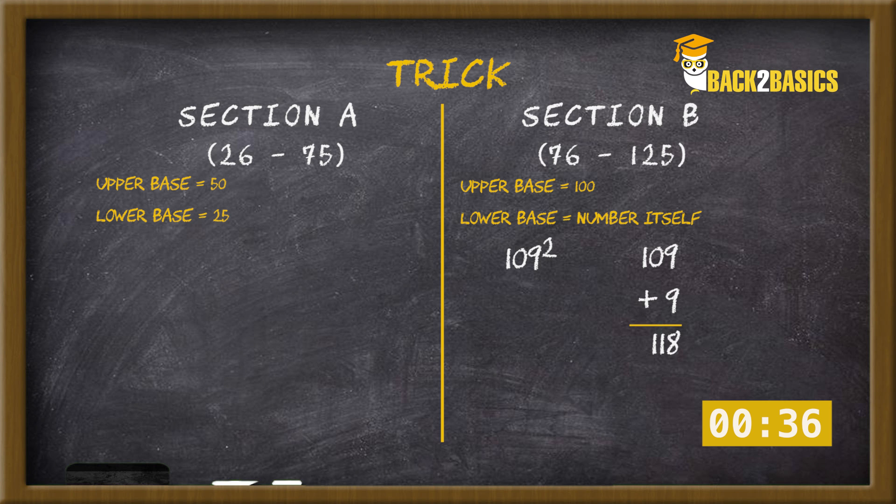Last two digits would be square of 9, that is 81. So the square of 109 comes to 11881.